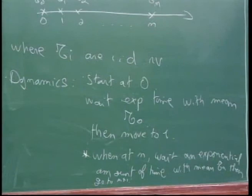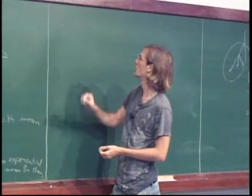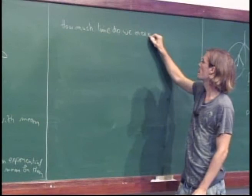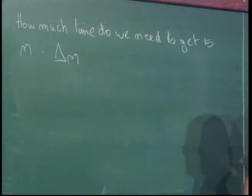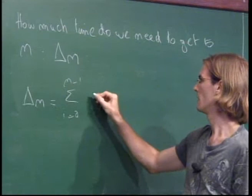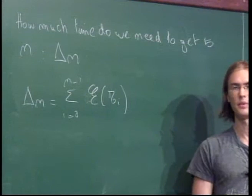A natural question is: how much time Delta_n do we need to get to n? In this model it's simply the sum from 0 to n-1 of exponential(tau_i) random variables. What we have is a sum of i.i.d. random variables — all the exponentials are i.i.d. and their means are i.i.d. with a certain law.